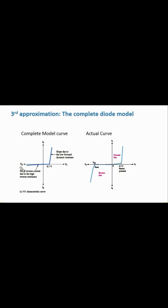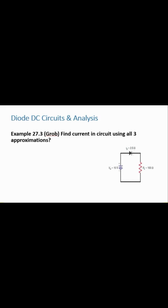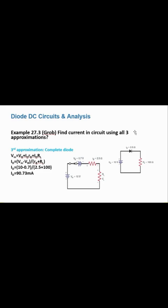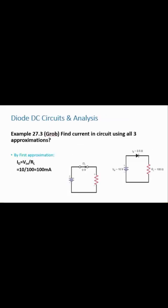For the same circuit example using the complete diode model, since the diode is forward biased, we replace it with a closed switch, Vf, and r'_b. The equation is: V_in = Vb + I_d × r'_b + I_d × R_L, from which we find I_d. Comparing all three approximations on the same circuit: the ideal model gives 100 mA, the practical model gives 93 mA, and the complete model gives 90.73 mA — the most accurate result.